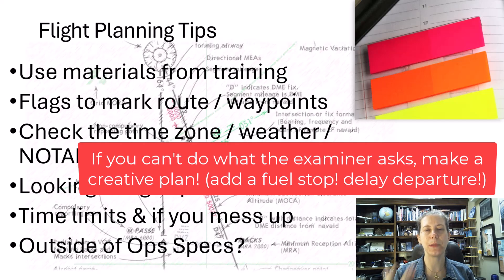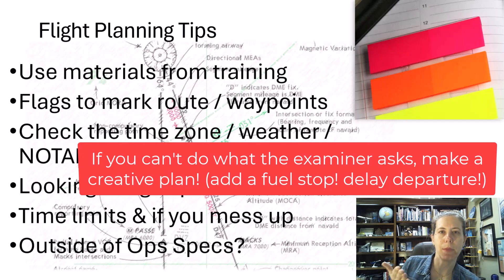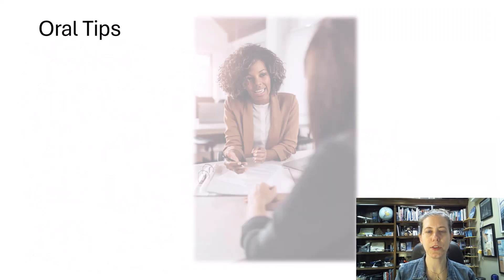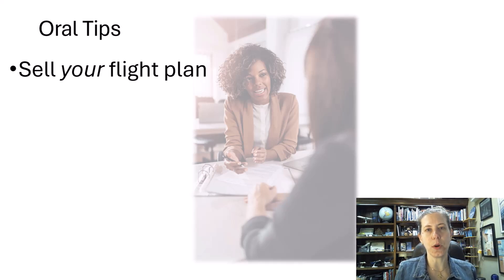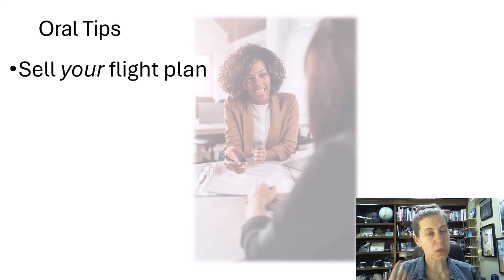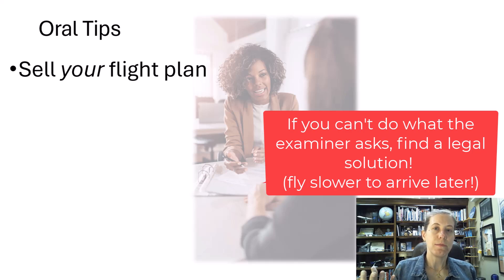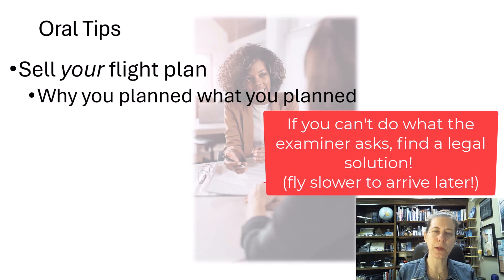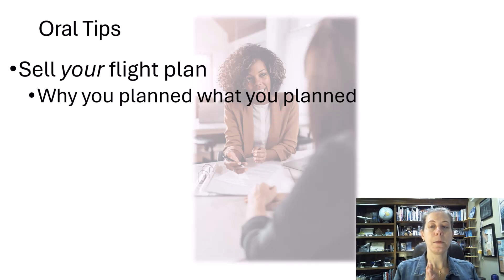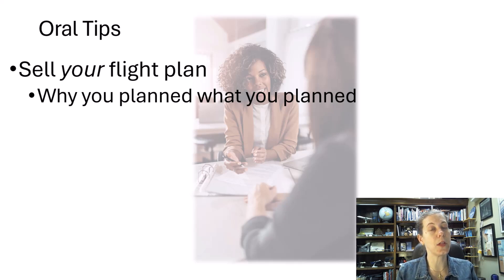If you can't do something, have a plan for what you could do. If they ask you to plan to an airport where you can't due to weather at the time of arrival, you could offer options when explaining your flight plan — you want to sell what you did. You could say, 'We could fly slower to arrive after a certain time period, we could leave later, we could delay the flight — we can still do this flight, but here are the limitations I have to work within.' You want to be able to explain why you planned what you planned. That shows the examiner you know what you're doing, you can think on the fly, make a decision, emphasize safety, and still get the mission done.